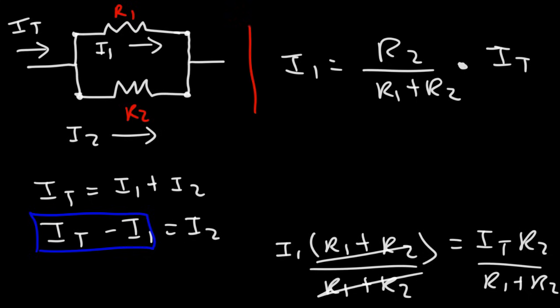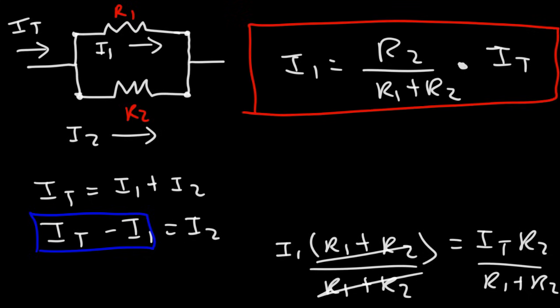So if you have a current splitting into two directions and you know the resistances of those two pathways, you can calculate the current flowing in each pathway using that current divider equation.